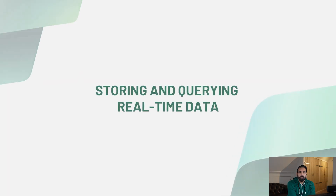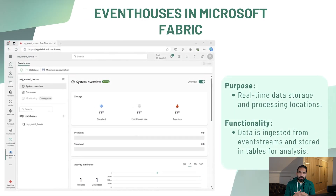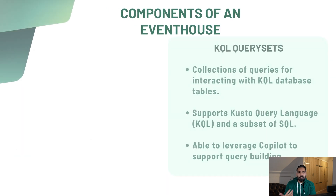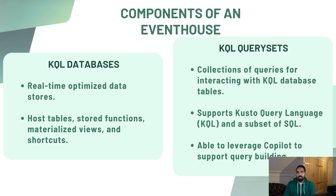We've learned about the different destinations, transformations, and services provided by Microsoft Fabric for real-time intelligence. Now we'll talk about storing and querying real-time data. You can store data into Event House and query it using KQL — Kusto Query Language. The purpose is to store your real-time data at one destination, the Event House, and perform analysis using KQL on top of it.